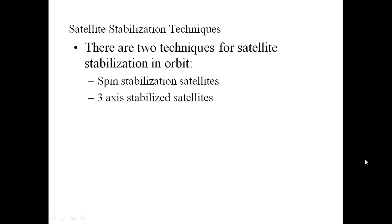There are a number of factors which cause the satellite to change its attitude and orbit, such as the gravitational fields of the Sun, Moon and other stars, irregularities in the Earth's gravitational field, solar pressure, pressures from the Sun, and variations in the Earth's magnetic field. Also, the gravitational field from the Sun and Moon change the orbit of the geostationary satellite over time. These are some factors that affect the attitude of the satellite.